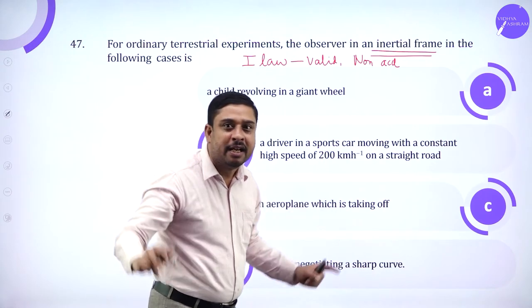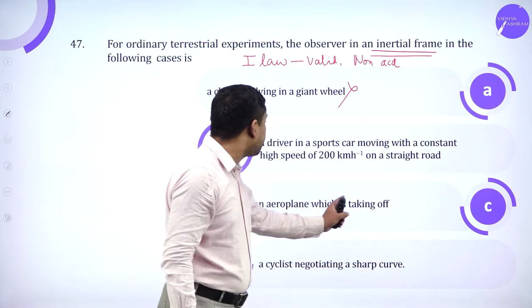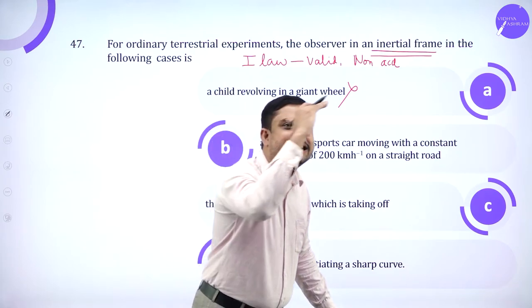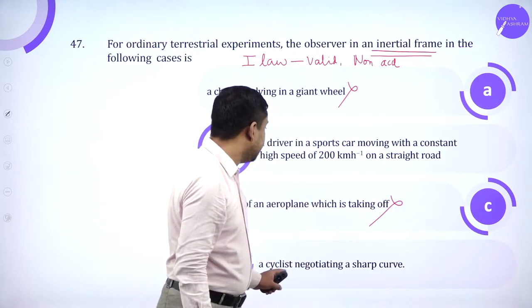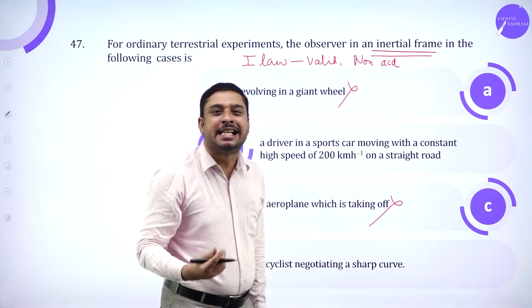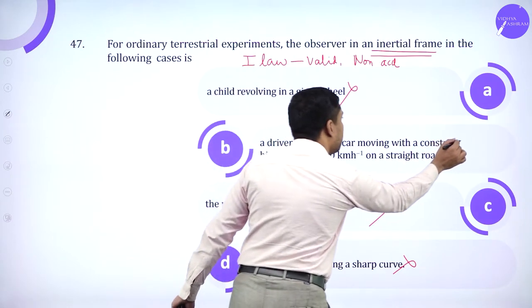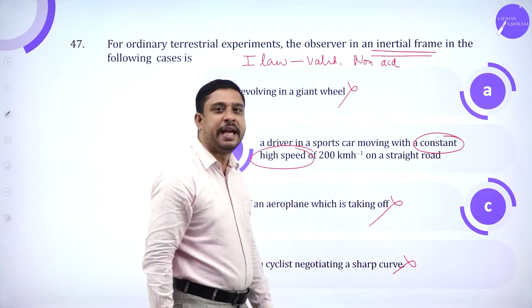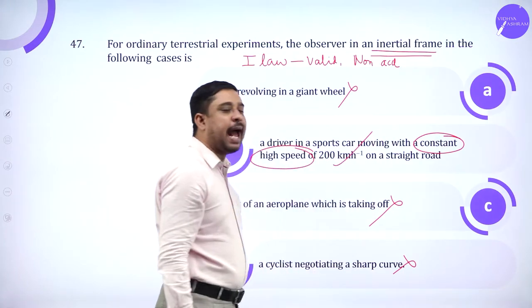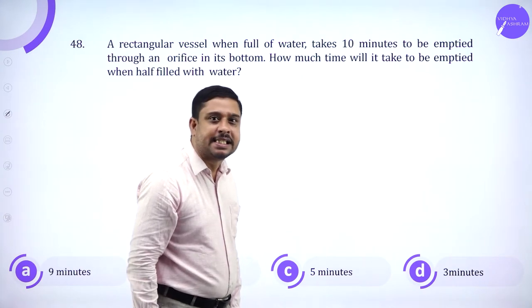Child revolving in a giant wheel—circular motion, acceleration comes into picture. No. Pilot of an aeroplane which is taking off—initially it moves with minimum velocity then increases its speed, it is accelerated. No. Cyclist negotiating a curve—centripetal force is coming into picture, there is acceleration towards the center. No. Driver in a sports car moving with constant high speed—speed is constant, acceleration is not possible. So this is the non-accelerated frame. Again this is from the previous syllabus, we don't discuss it in detail.